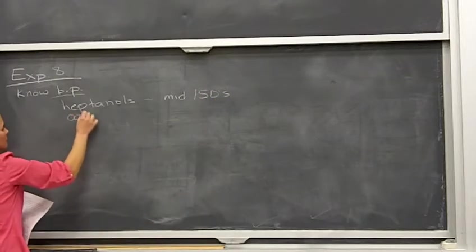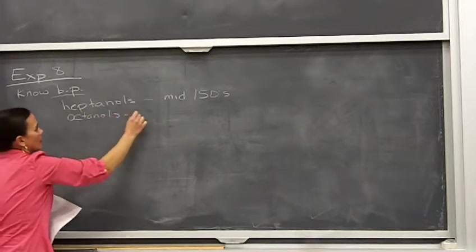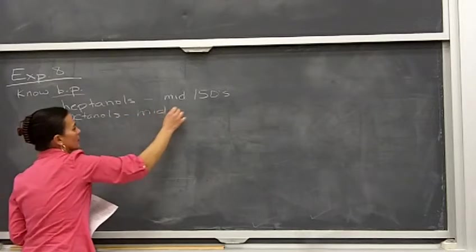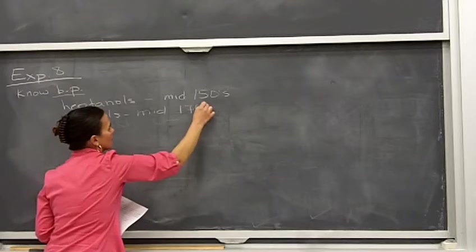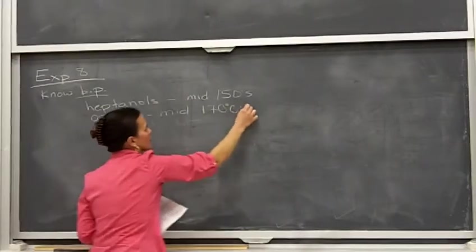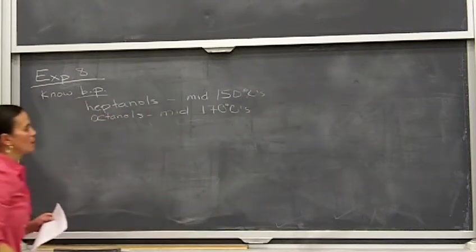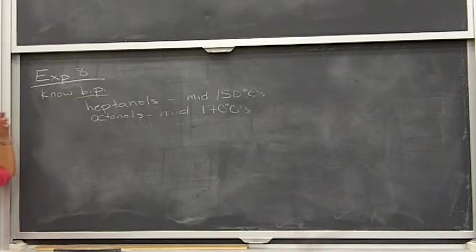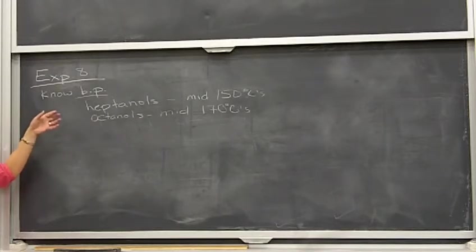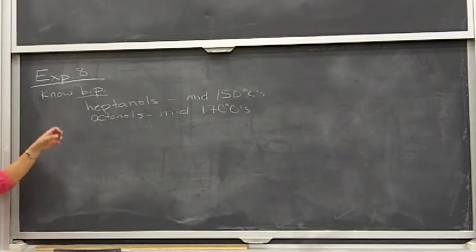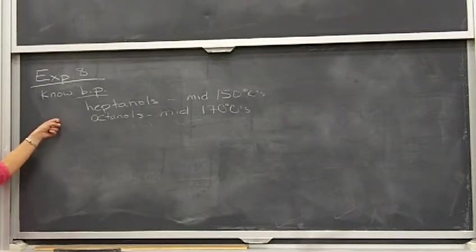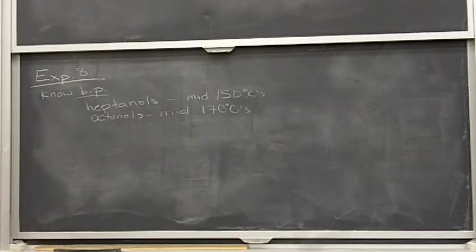The octanols are in the mid-170s. Keep this in mind when you go to do the distillation, because you need to know what the boiling point range is of your alcohol so you collect it over the right temperature range. If you have any questions before you start the distillation, make sure you talk to your lab instructor to make sure you understand exactly what boiling point range you're looking for.